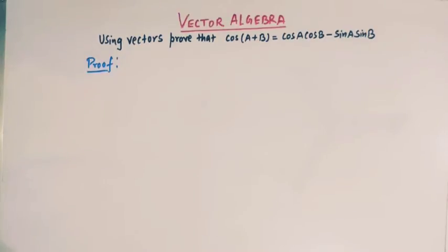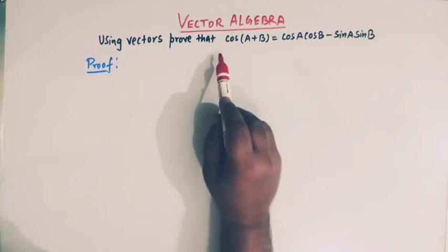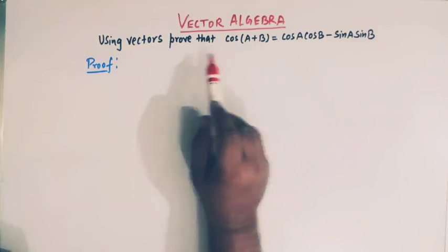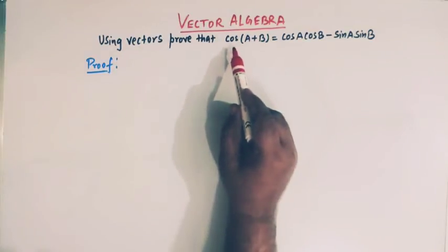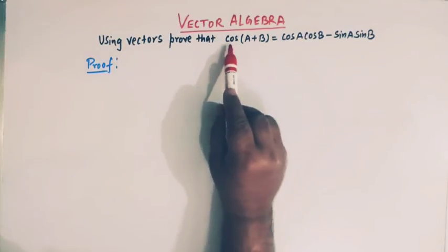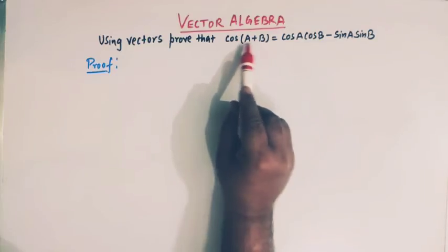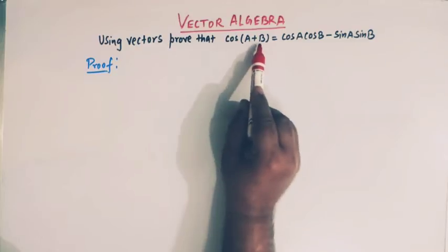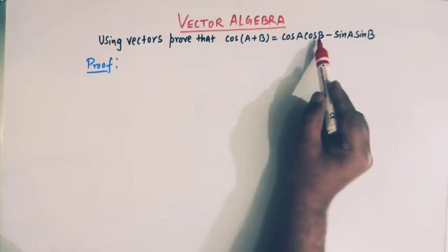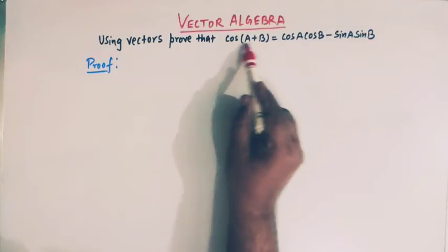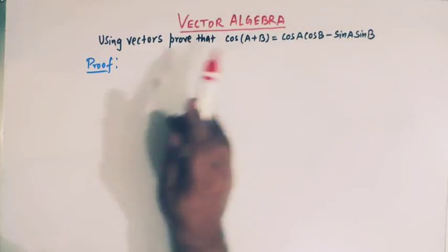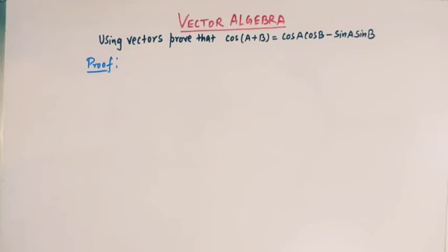Hello viewers. In today's class we are going to prove an important result in trigonometry using the concept of vectors. Here we will prove the formula: cosine of the sum of two angles a and b, that is cos(a+b) = cos(a)cos(b) - sin(a)sin(b). We will prove this result using vectors. Let us start.